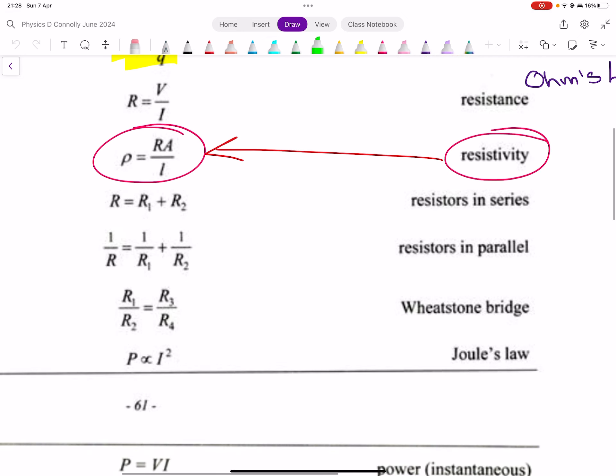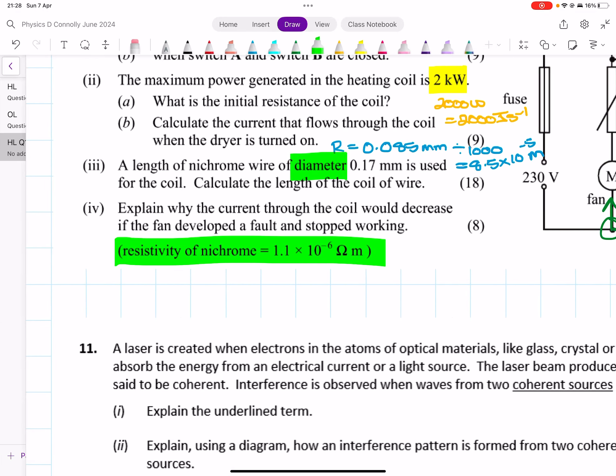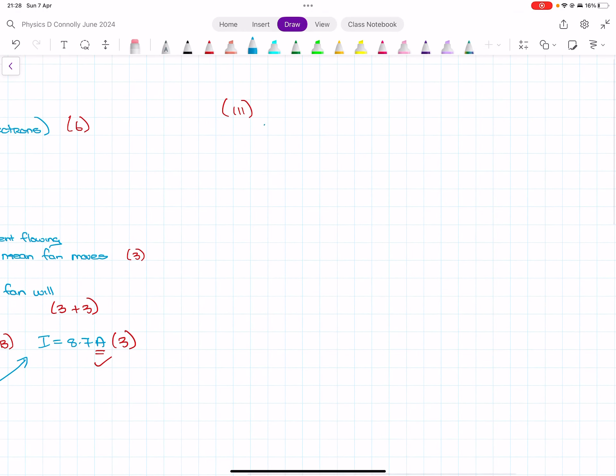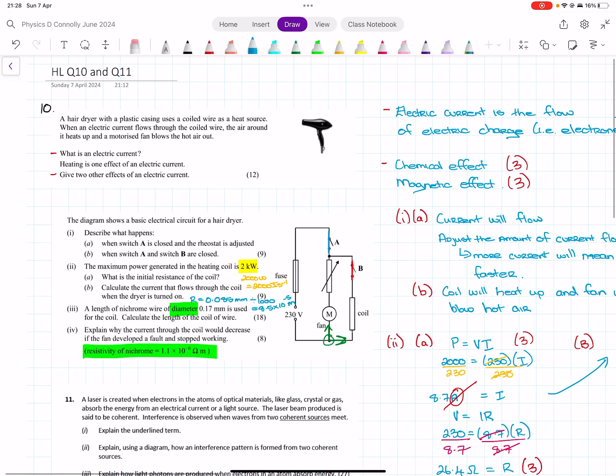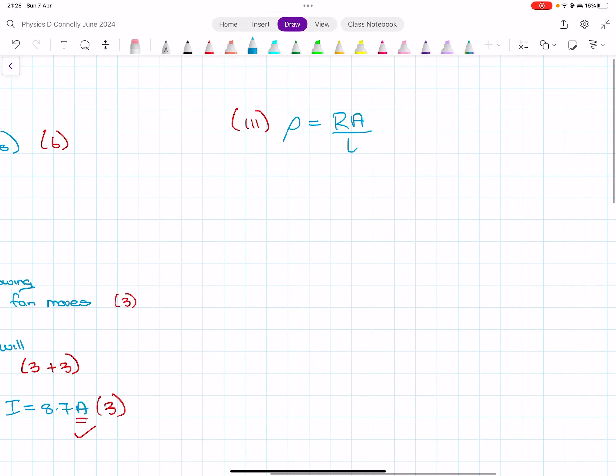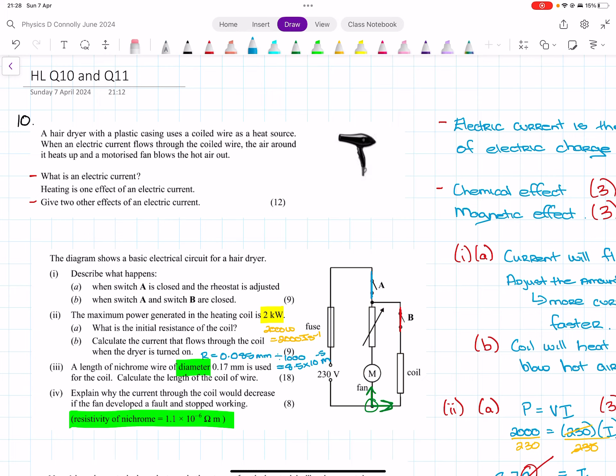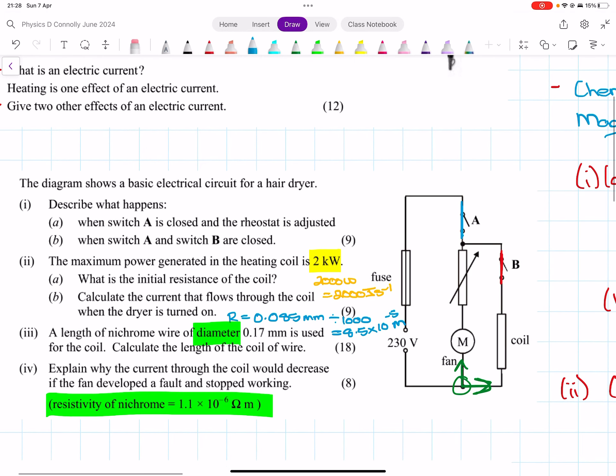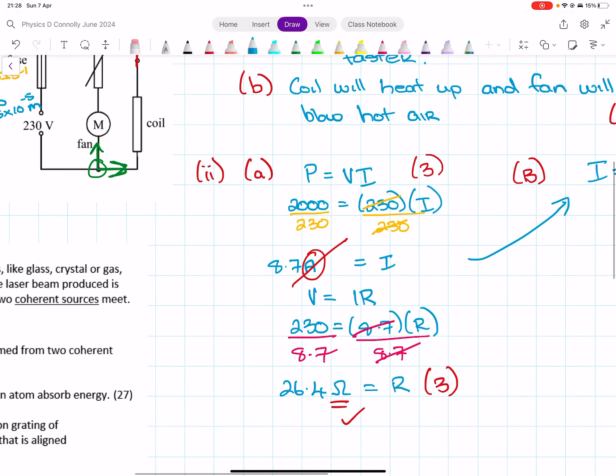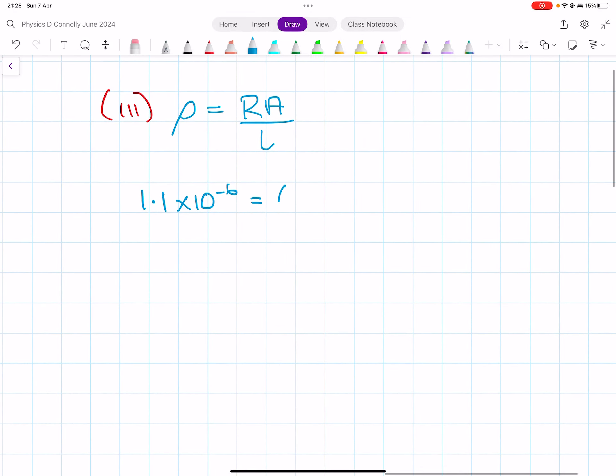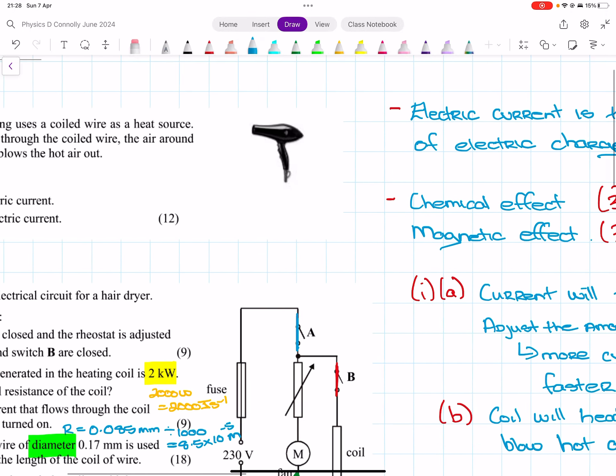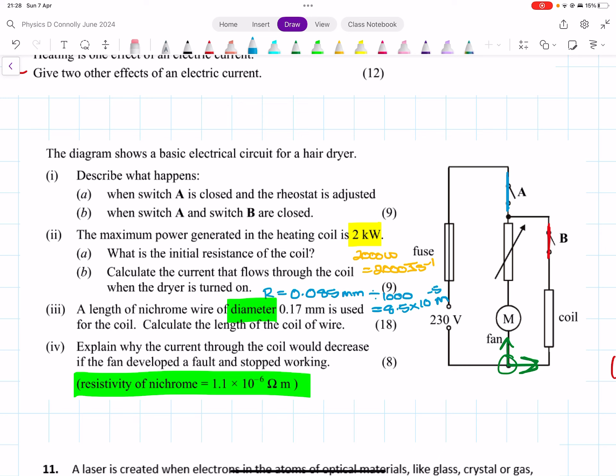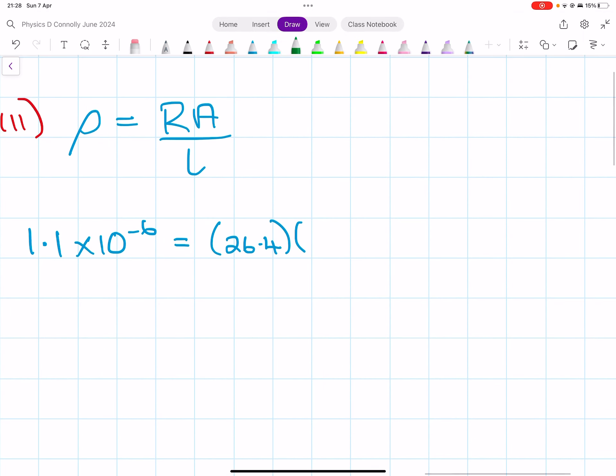Calculate the length of the coil of wire. Anytime they're mentioning nichrome wire and giving diameters, it's normally that resistivity formula. If you look down here, they give the resistivity. Rho equals RA over L. So rho is 1.1 by 10 to the minus 6—that's your resistivity—equals resistance. We got the resistance in part A, so 26.4. A length of nichrome wire is used for the coil, so yeah, it's the same thing.